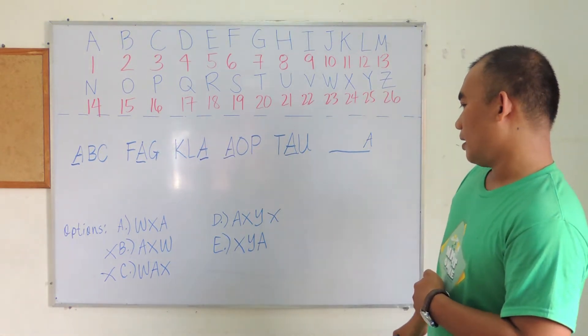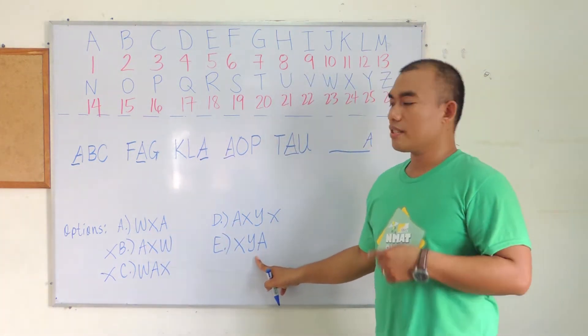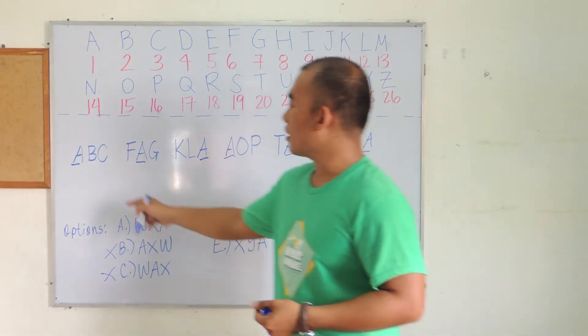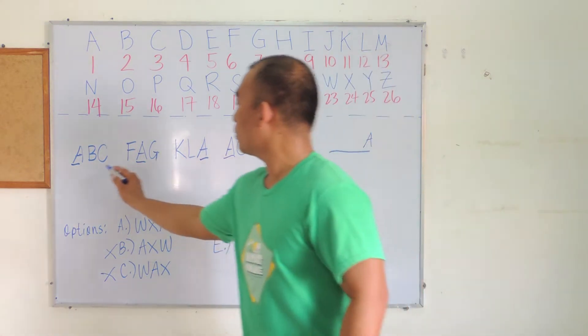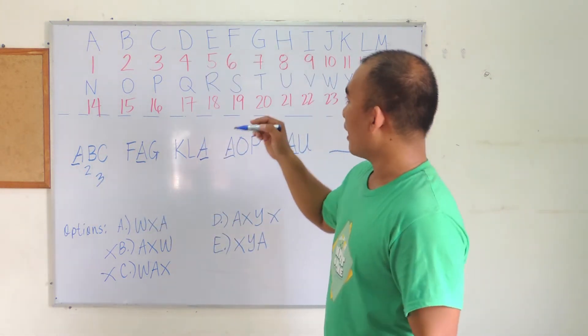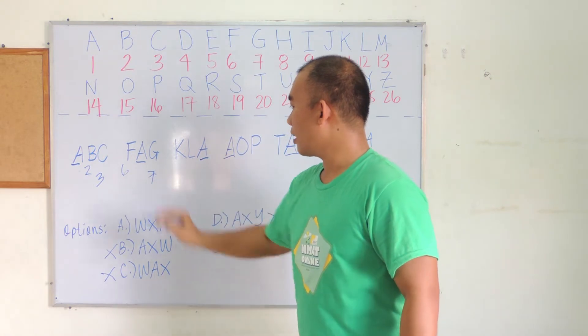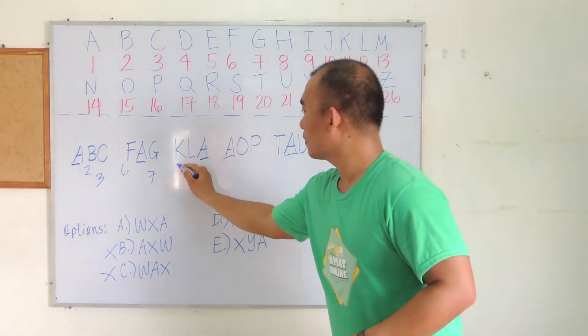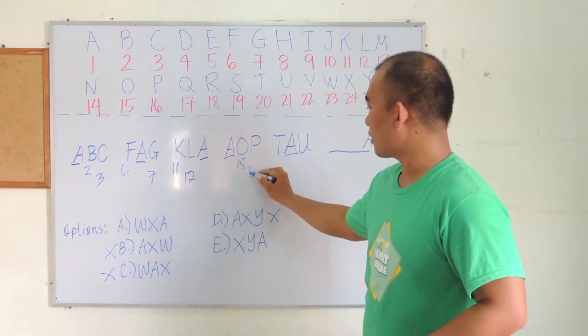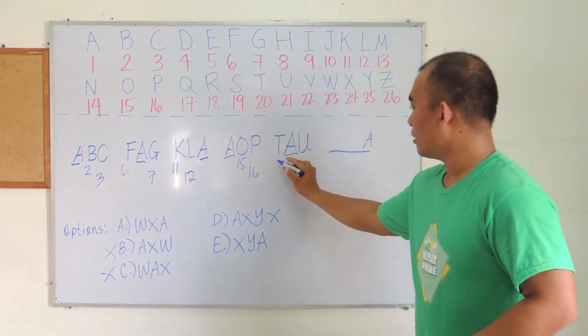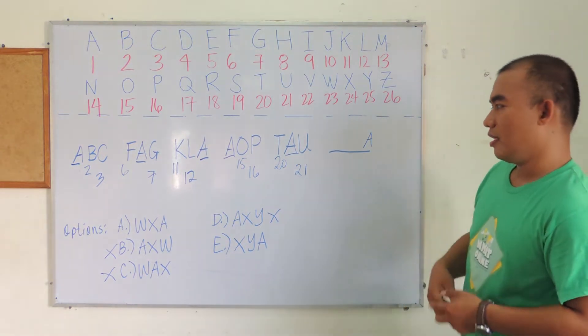The difference between options A and E is WX and XY. So let's determine the correct answer using the other two letters. I'm going to focus only on the two remaining letters aside from A. We have B is 2, C is 3, F is 6, G is 7, K is 11, L is 12, O is 15, P is 16, T is 20, U is 21.